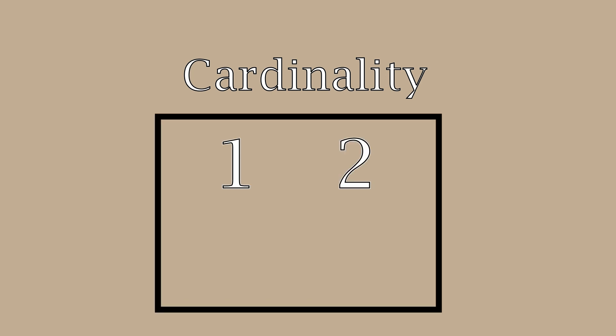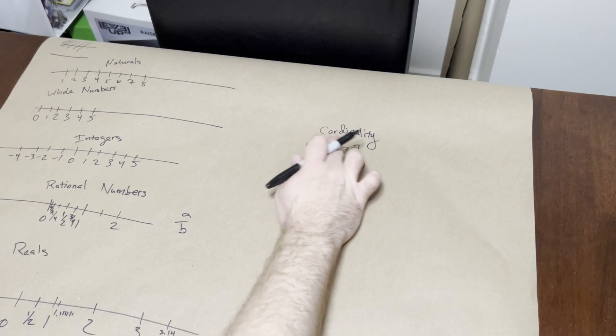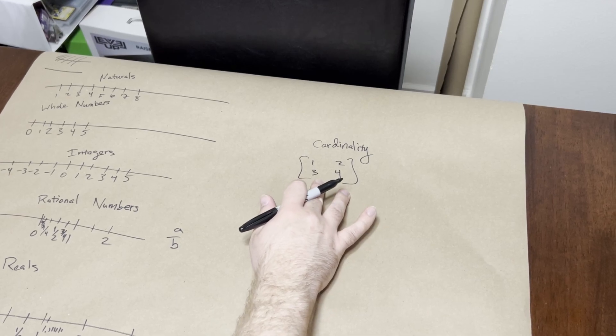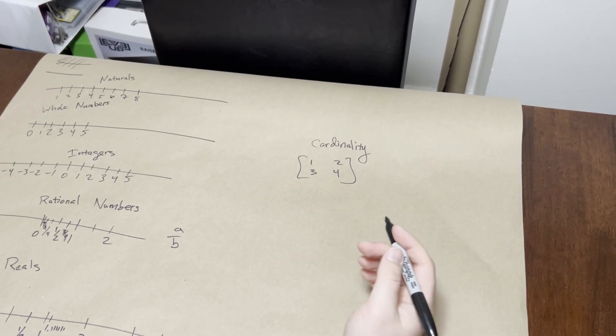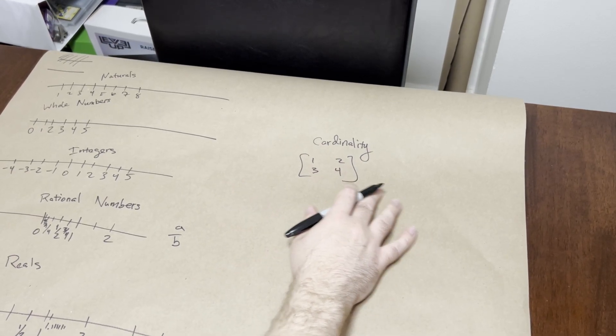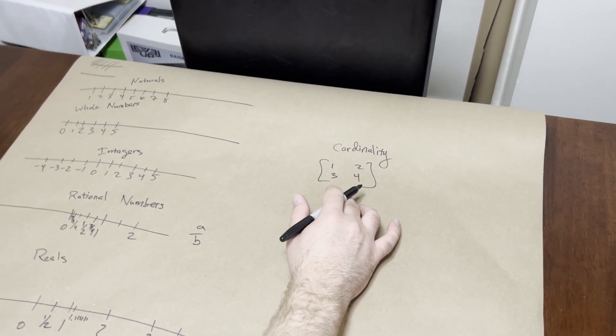Let's talk about cardinality real quick. Cardinality is a really simple concept. Let's say you have a set of four things. How many things are in this set, Patrick? There are four things. There are four things, okay. Now, I put these numbers in here. They could be four apples, four bananas, just a number of four things. We say that this set's cardinality is four. That's just the amount of stuff in a set.